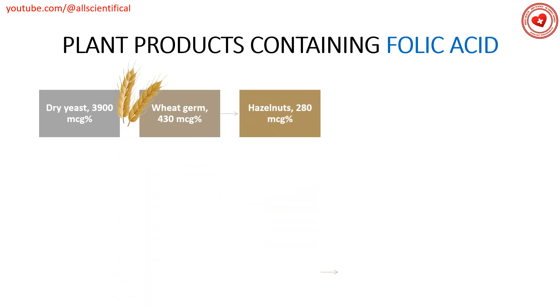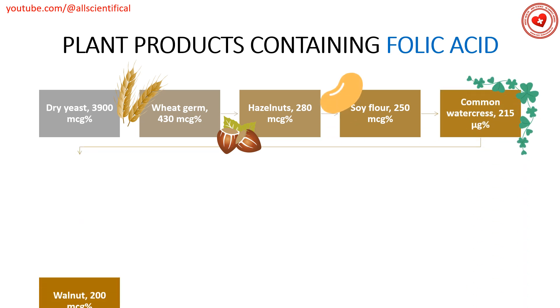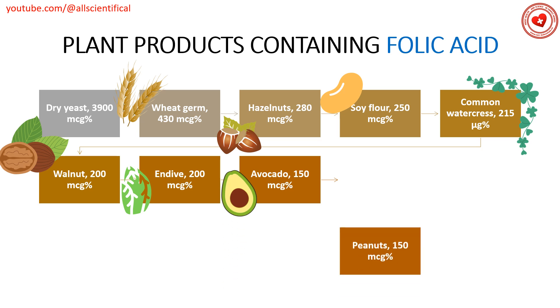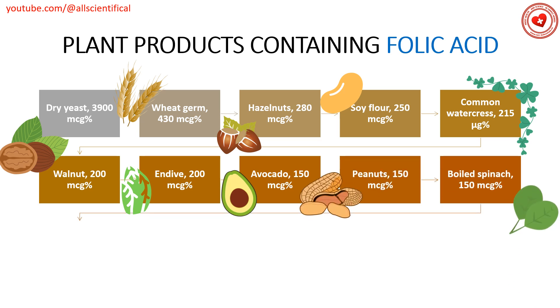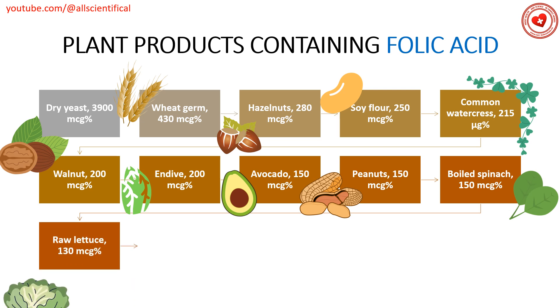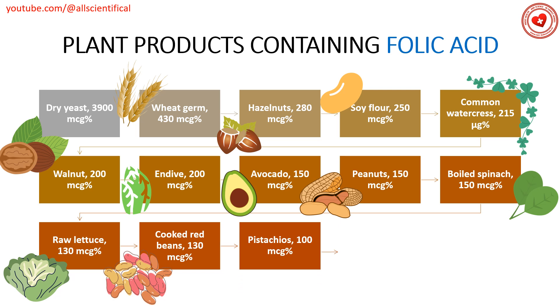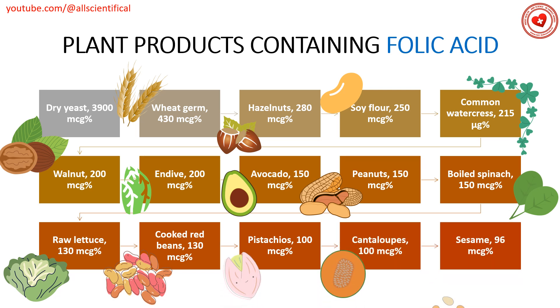Plant foods containing folic acid include: dry yeast, avocado, peanuts, boiled spinach, raw lettuce, boiled red beans, pistachios, cantaloupe, and sesame.